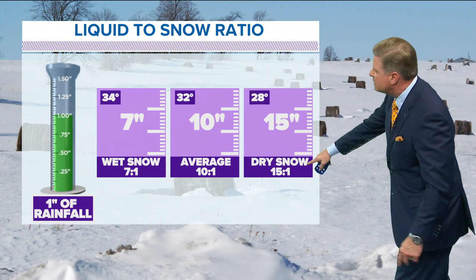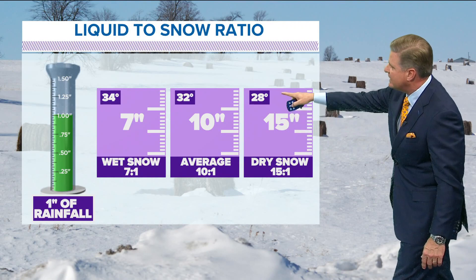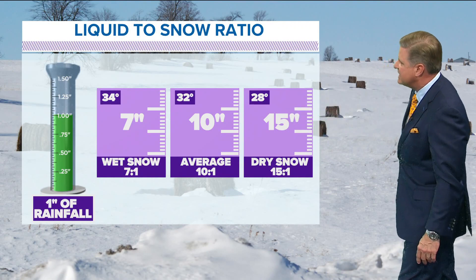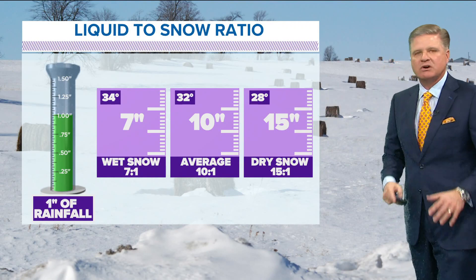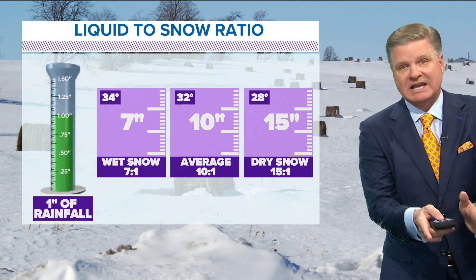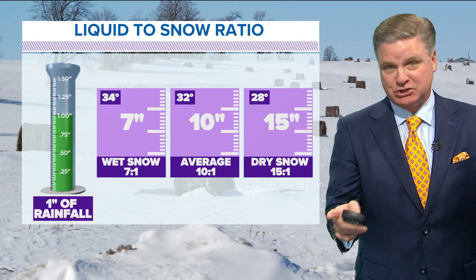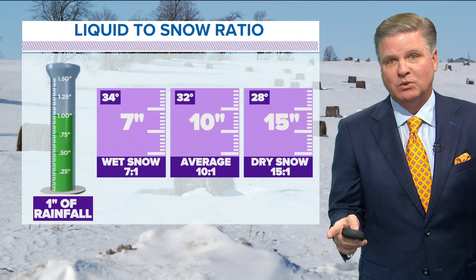We're probably a little closer to the 15-to-one ratio — at 28 degrees, 15 inches of snow. The colder it is, the higher your snowfall total will be.